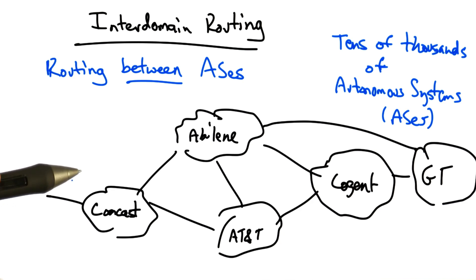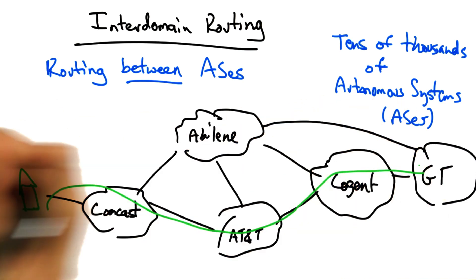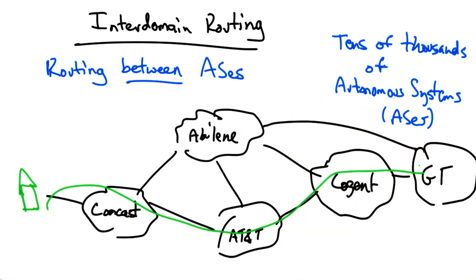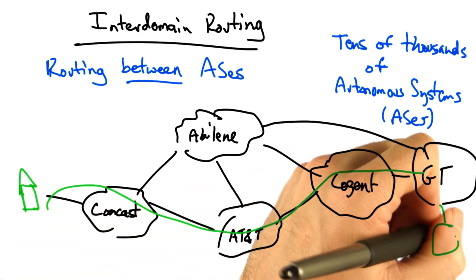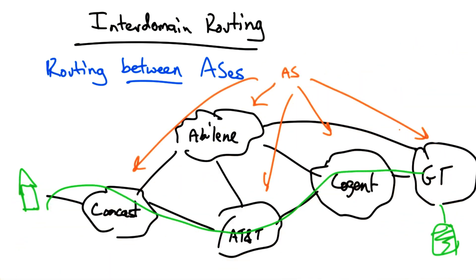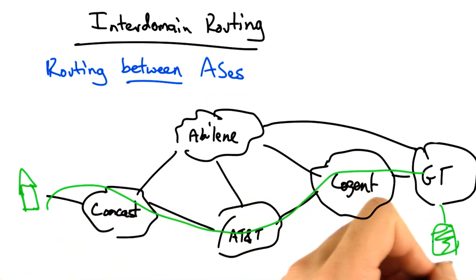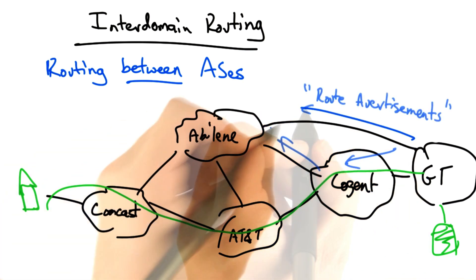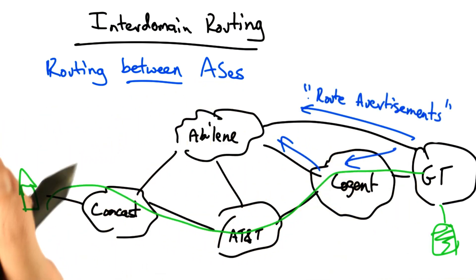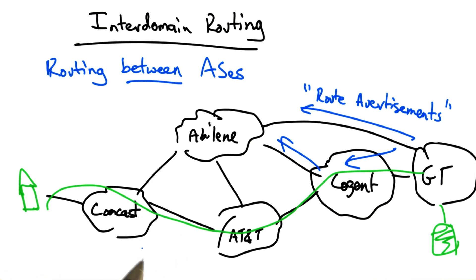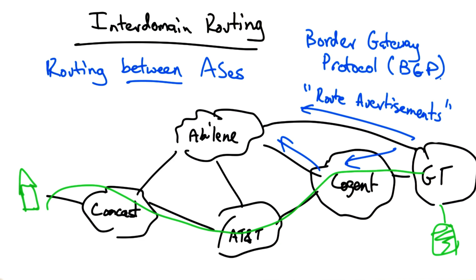And yet they must cooperate to provide global connectivity so that when you're sitting at home, you can retrieve content that might be hosted at the Georgia Tech network. Each independently operated network is called an autonomous system, or AS. Each AS advertises reachability to some destination by sending what are called route advertisements, or announcements. The protocol that ASs use to exchange these route advertisements is called the Border Gateway Protocol, or simply BGP.